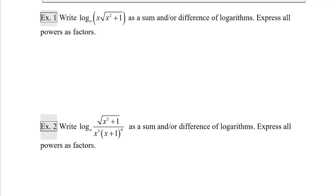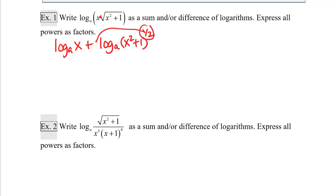In example one, write log base a of x times the square root of x squared plus one as a sum and/or difference of logarithms, and express all powers as factors. This is x times the square root of x squared plus one, so I can write this as log base b of x plus log base a of the square root of x plus one. The square root is really the same as raising to the one-half power, so I need to express my power as a factor.